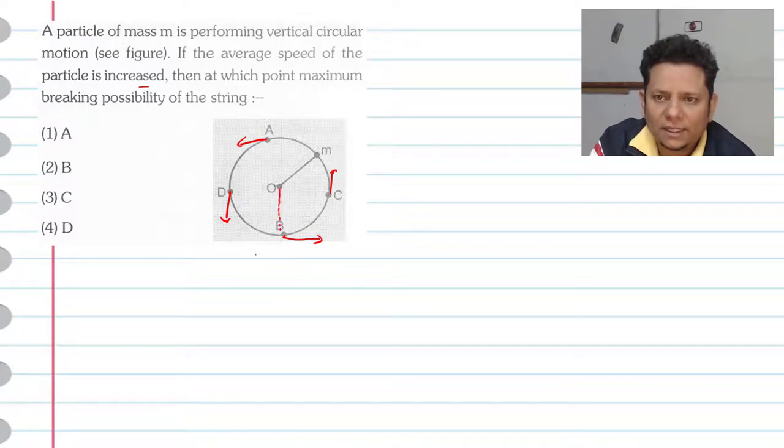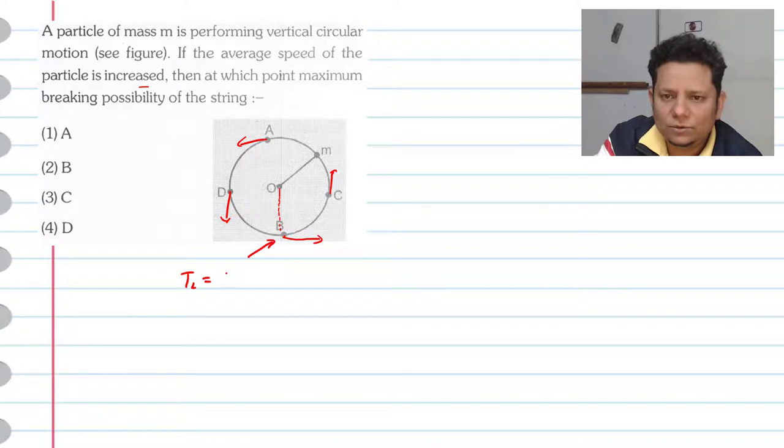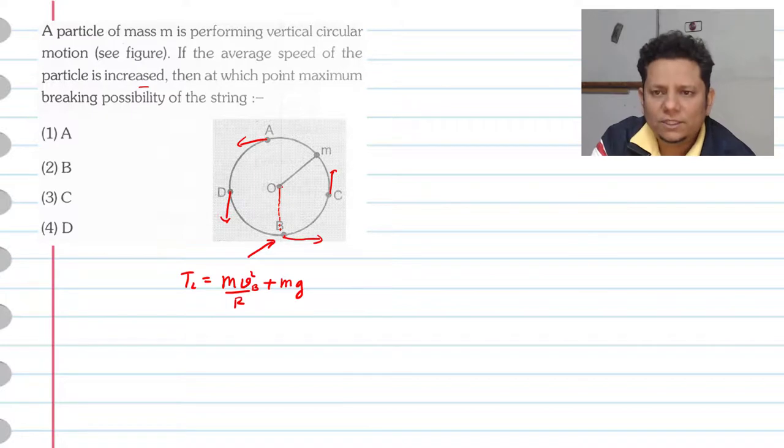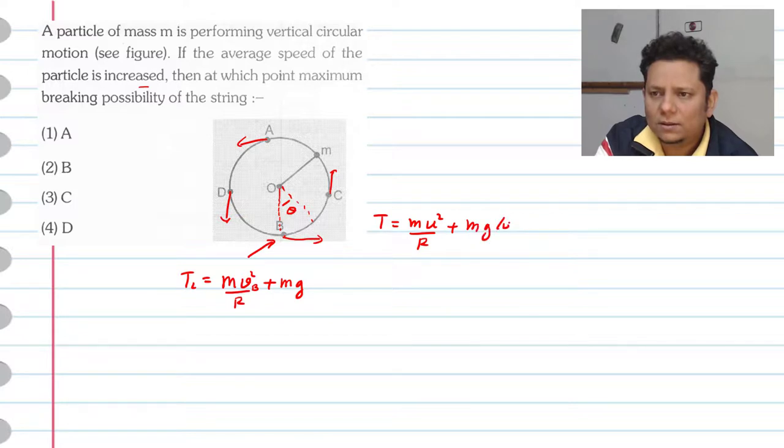This is what we know: the tension T at the lowest point, we write this will be equal to mv²/r. And this will be equal to mv²/r plus mg cos θ.